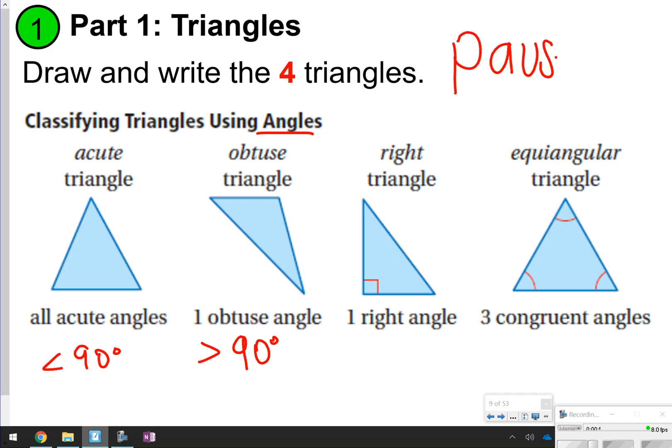An equiangular triangle just means that they're three congruent angles. Go ahead and take time now to pause the video, draw and label all of the triangles, and once you're done, click play.